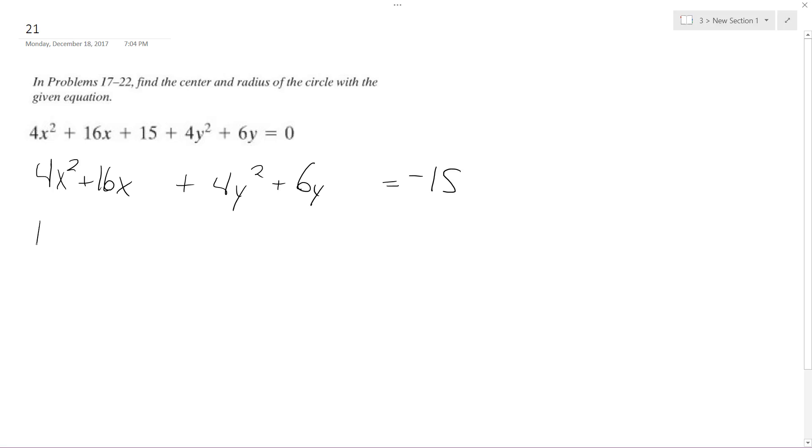So I can separate a 4 out of the x term: 4(x² + 4x). And then half of this squared is 2, well, 2 squared, which is 4, and then I'll balance the equation.